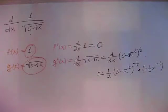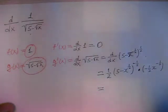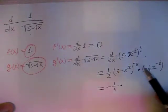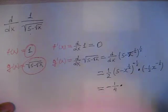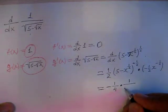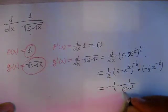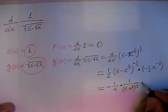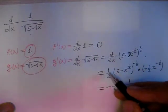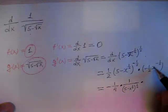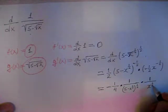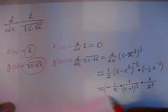Now we use algebra to simplify g'(x). We multiply negative one-half and one-half, giving negative one-fourth. Then we rewrite the negative powers as positive powers in the denominator: one over (5 minus x to the one-half) to the one-half, times one over x to the one-half. This is g'(x).